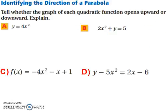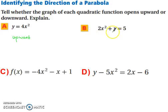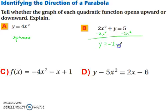Let's identify the direction of a parabola. Tell whether the graph of each quadratic function opens upward or downward, and then explain. For part a, since the a value is positive or greater than 0, it opens upward. For part b, you have to solve for y first. Subtract 2x squared from both sides, and you get y equals negative 2x squared plus 5. The a value is negative, so it opens downward.